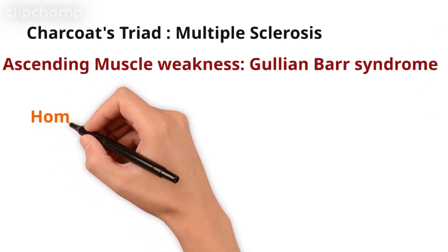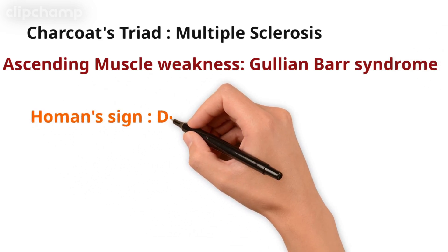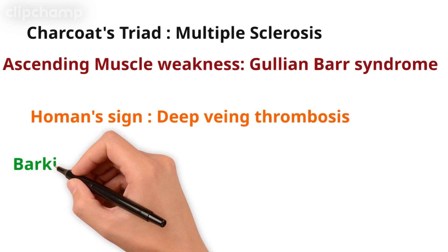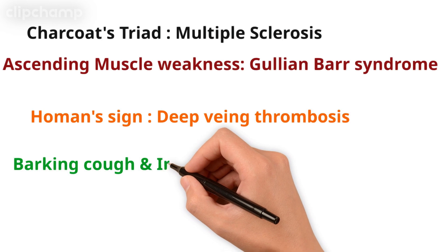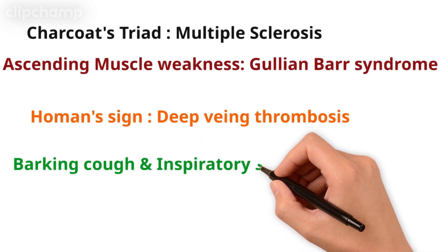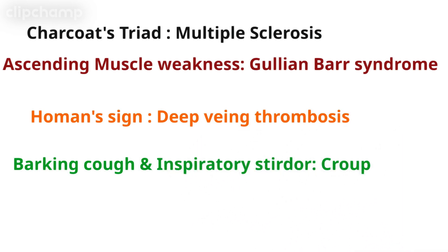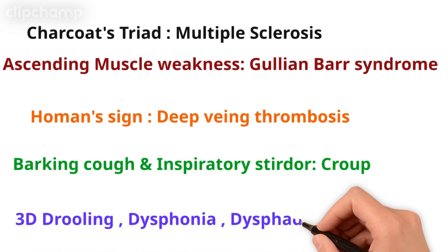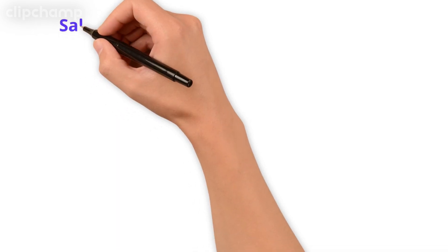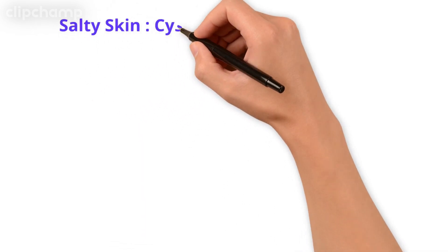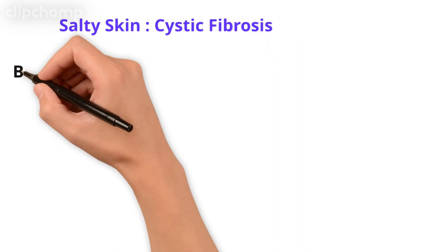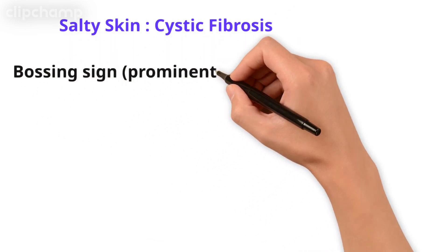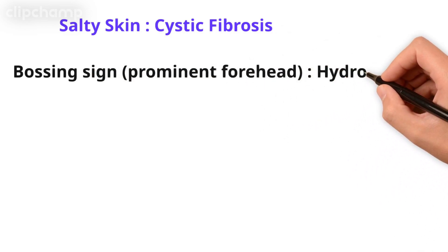Charcot's striae is the pathognomonic symptom of multiple sclerosis. Ascending muscle weakness is the pathognomonic symptom of Guillain-Barré syndrome. Homans' sign is deep vein thrombosis. Barking cough and inspiratory stridor you will see in child croup. Three D symptoms — dysphonia, dysphagia, drooling — it is epiglottitis.